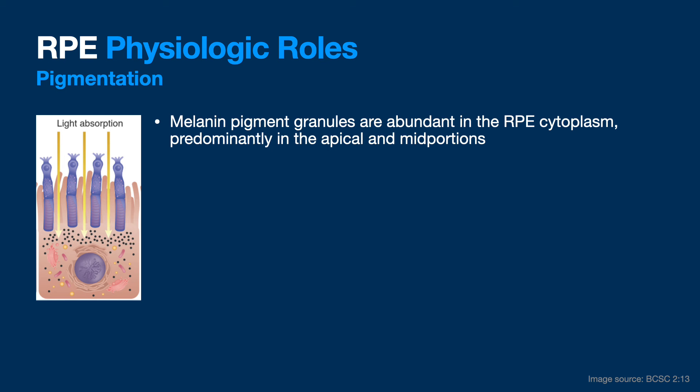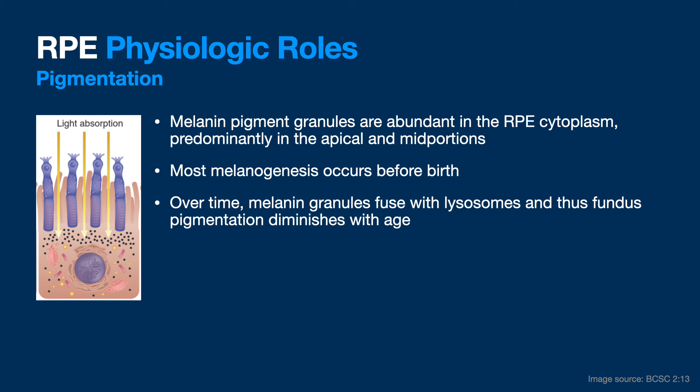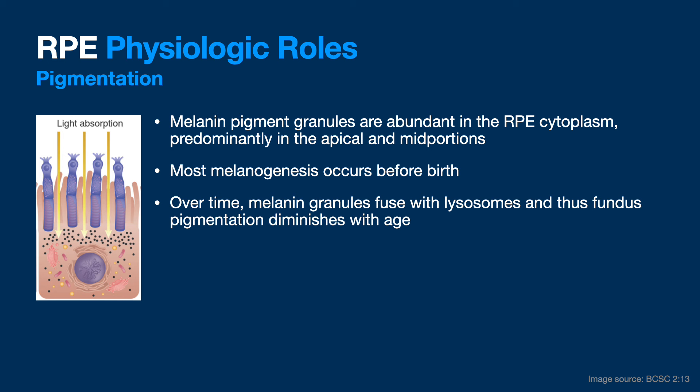Light absorption: melanin absorbs light. Most melanogenesis occurs before birth. Melanin infuses the lysosomes, and pigmentation actually diminishes with age. Without melanin you don't have good neuronal migration or good foveal development — you might get fovea plana. Melanin is also critical in laser photocoagulation.